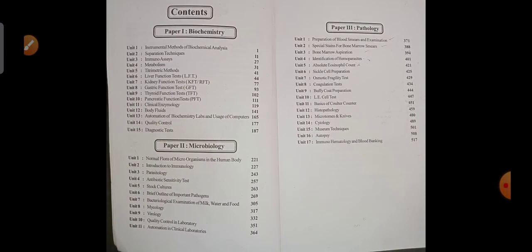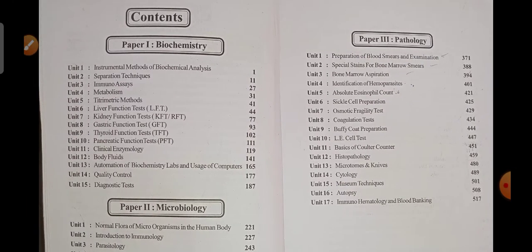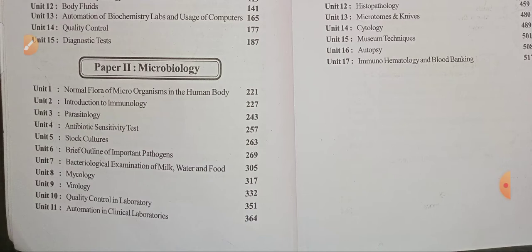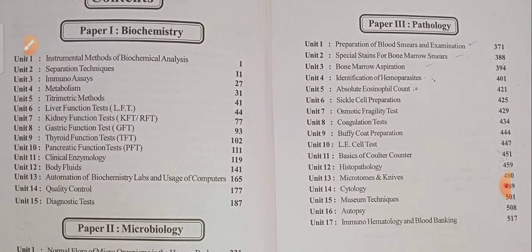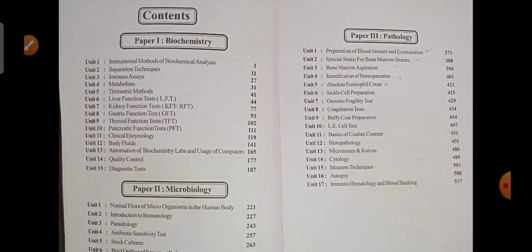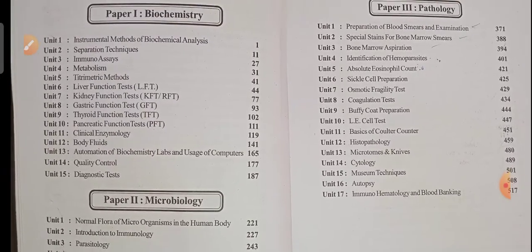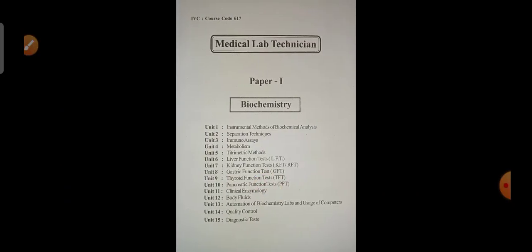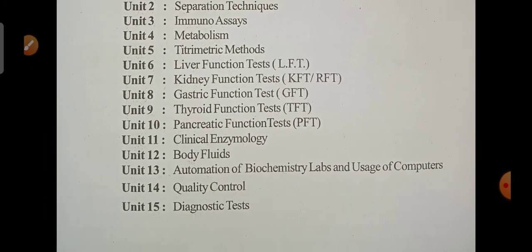There are three subjects in MLT second year: biochemistry, microbiology, and pathology. Biochemistry has 15 units, microbiology has 11 units, and pathology has 17 units. Today I would like to give you some of the important questions in the subject of biochemistry, which has 15 units.